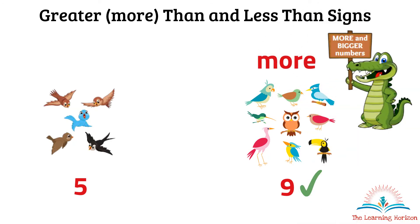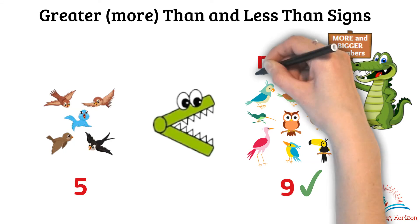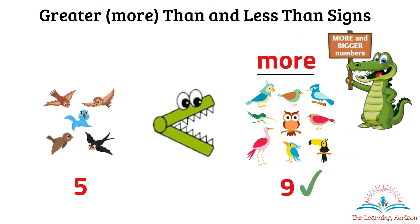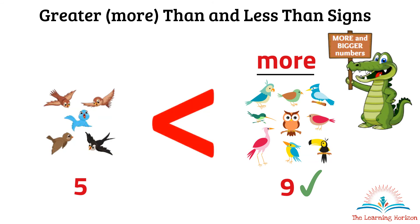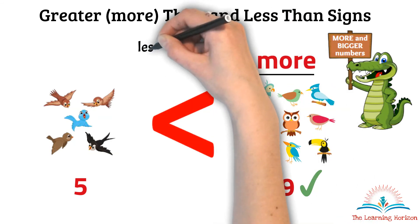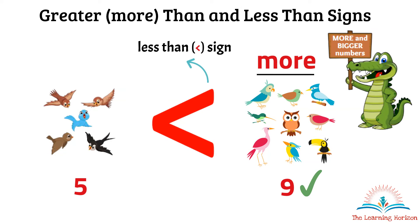The hungry alligator will eat these birds because they are more. The sign shown is the less than sign. So here, 5 is less than 9.